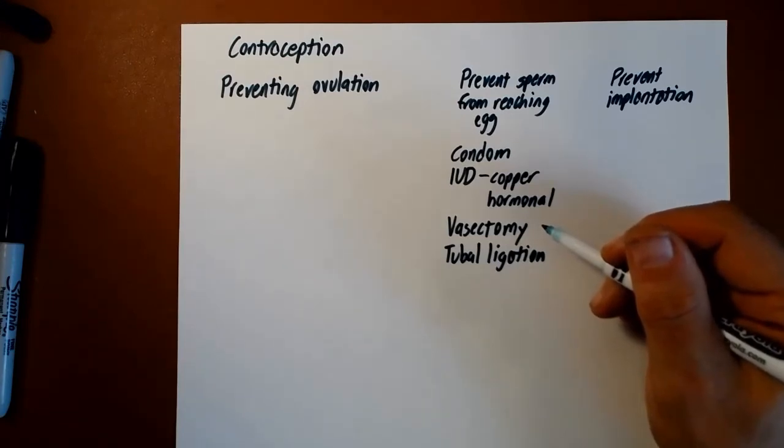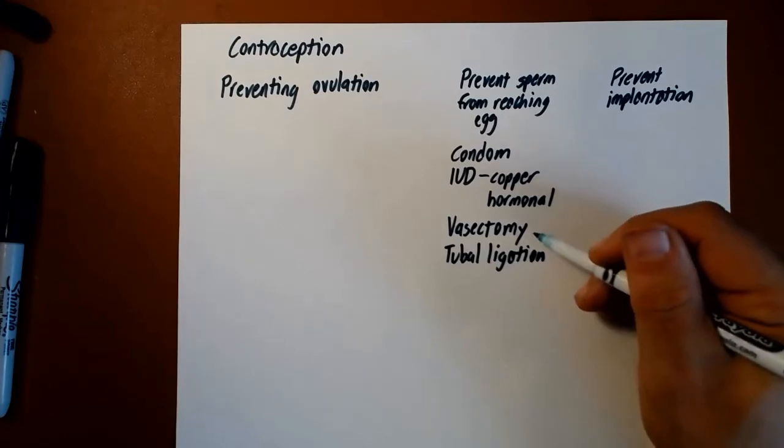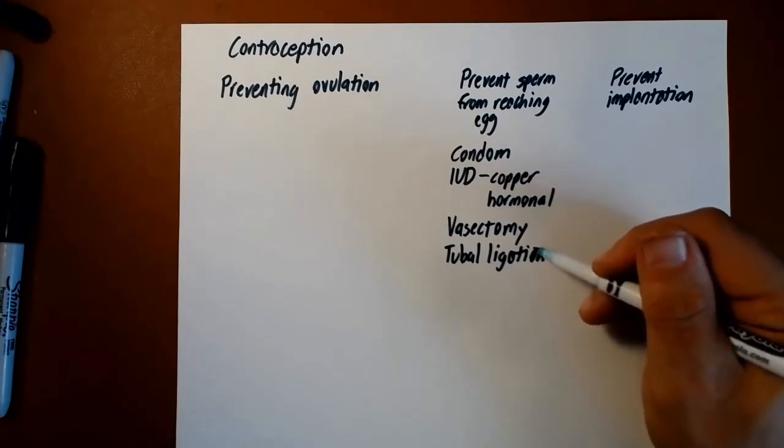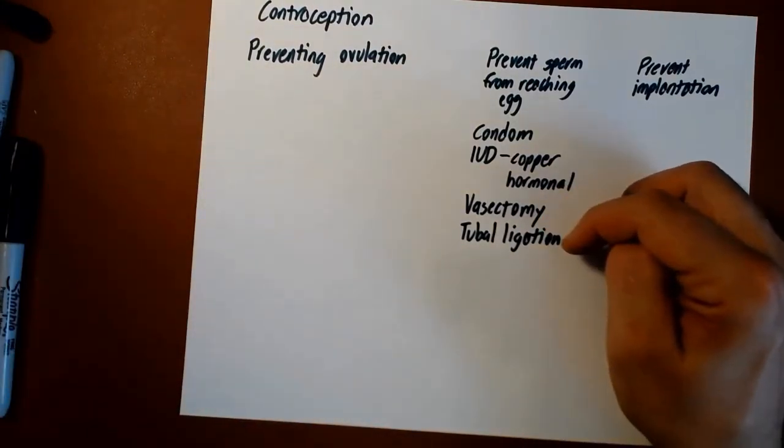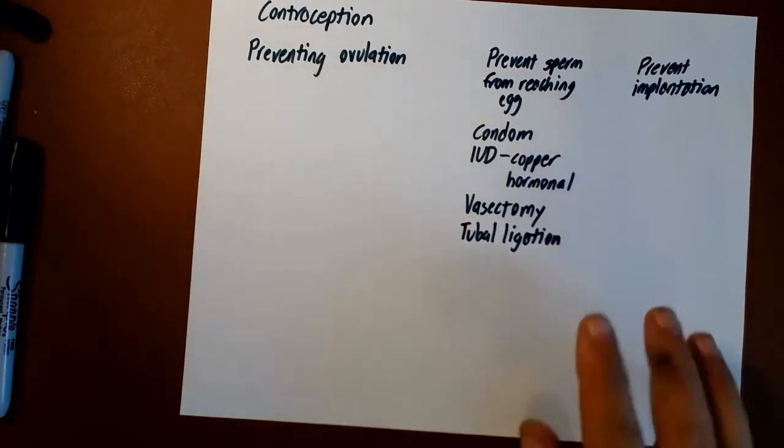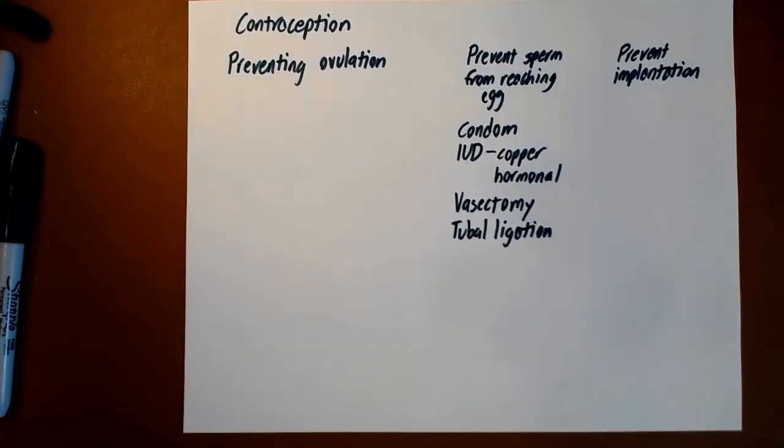The only public service announcement I'll make there is, guys, if you are in a relationship with someone and you have decided that you are absolutely sure that neither of you wants to get pregnant, you're willing to make a permanent commitment to that effect, guys, step up and do the vasectomy. Tubal ligation is much more risky for the woman involved. Vasectomy is much less risky for you. In theory, both of these can be reversed sometimes. However, you should assume, if you're having one of those, that it is a permanent method.